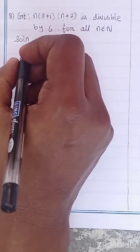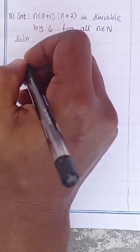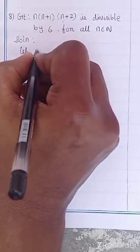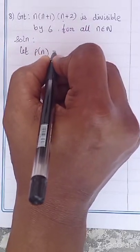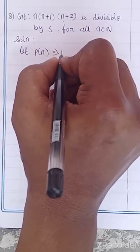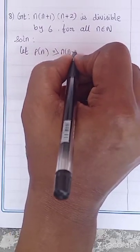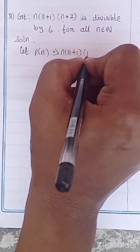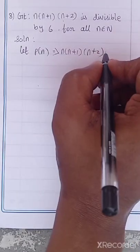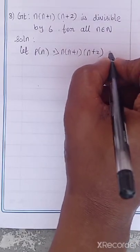What is your first statement? Let P of N imply: N into N plus 1 into N plus 2 is divisible by 6.